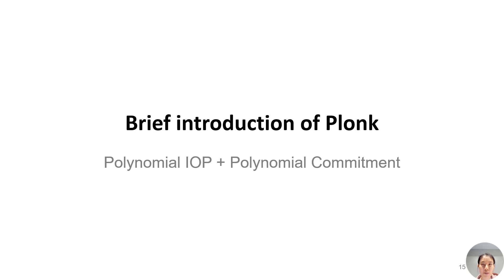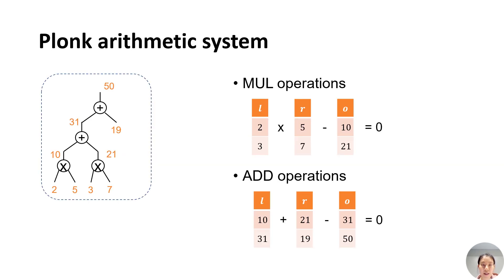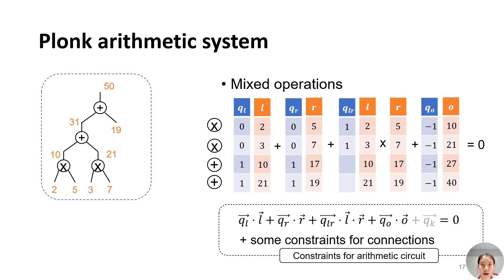Before introducing our protocol, let me give you a brief introduction to Plonk. Suppose we have an arithmetic circuit consisting of a list of multiplications and additions. On the right, we can write them into two tables where the orange columns denote the left, right, and output values of each gate. In the Plonk protocol, it constructs a single table to represent the mixed operations, where the blue columns act as switches for the entries in the orange columns. After representing each column with a vector and complementing it with extra constraints, we can derive a list of vector identities for the circuit.